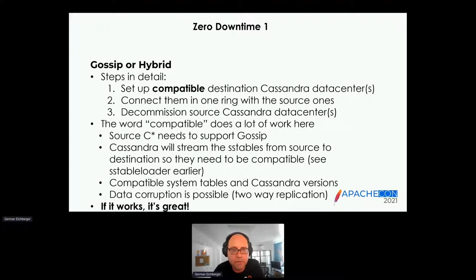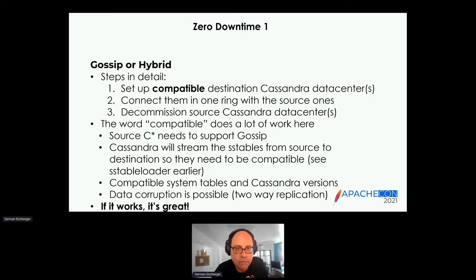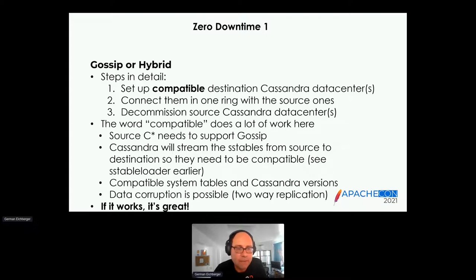Cassandra streams SSTables from the source to the destination, so they need to be compatible — not encrypted, similar versions, and compatible system tables. There's also a risk of data corruption: since it's two-way replication, if you start using new features on the destination, they may replicate back and corrupt the source database. It's best to run this only for a short period and decommission the source promptly once migration is complete.